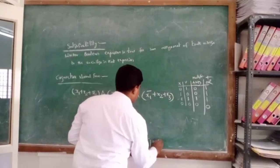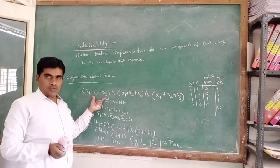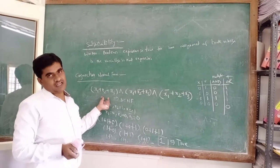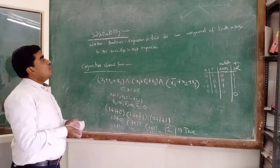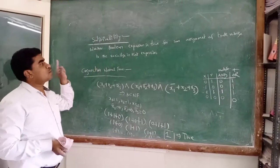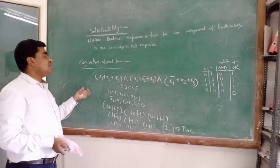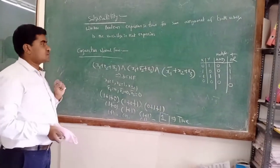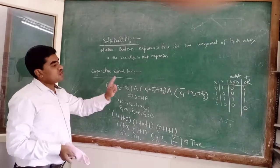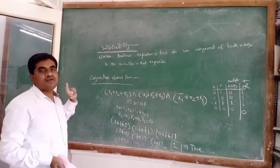If the output is 1, the boolean expression is true and it is satisfiable. If the output is 0, it is not satisfiable. In summary, satisfiability means whether a given boolean expression is true for some assignment of truth values to its variables — assigning 0 or 1 to each literal. If the output equals 1, it is satisfiable; if 0, it is not. This is the satisfiability problem.